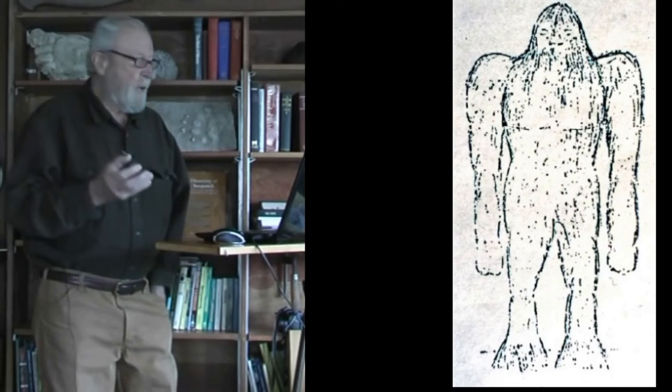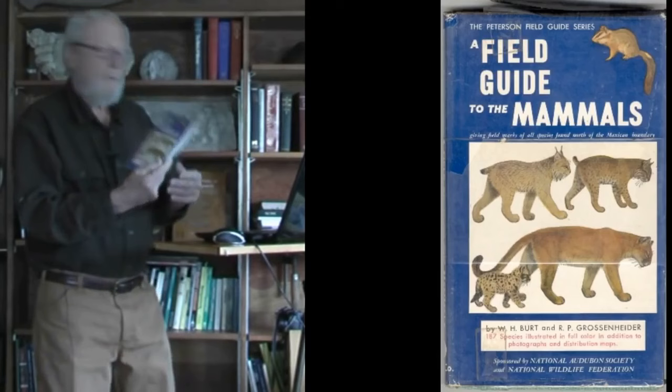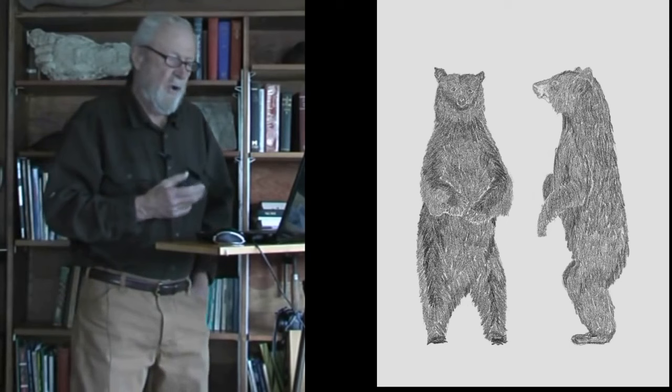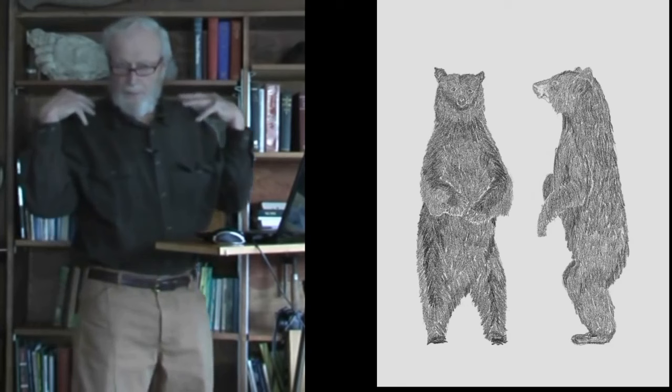This raises a problem right at the outset. If you'd seen that, you'd come home and go through a field guide to the mammals looking for a mammal that looks like this. The closest image we'll find is a bear on its hind legs, which could be depicted in both front and side view. A bear on its hind legs has tapered shoulders, not these broad, hominoid, ape-like or human-like shoulders.